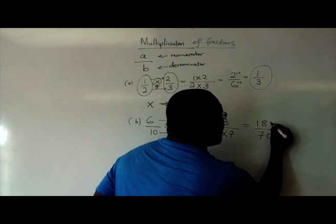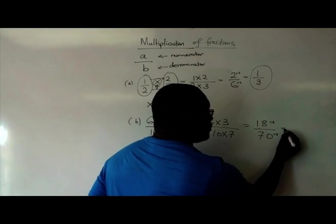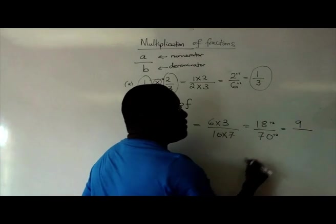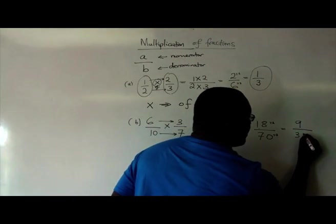Divided by 2, divided by 2. 18 divided by 2, it'll be 9. 70 divided by 2, it'll be 35.